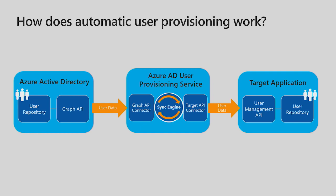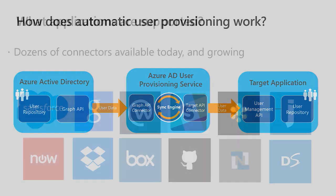and pushes user data to a target application. It does this automatically whenever a change to the user data is detected in the source system, and provides rich control over what users and what attributes in each system are in scope for automatic user provisioning.